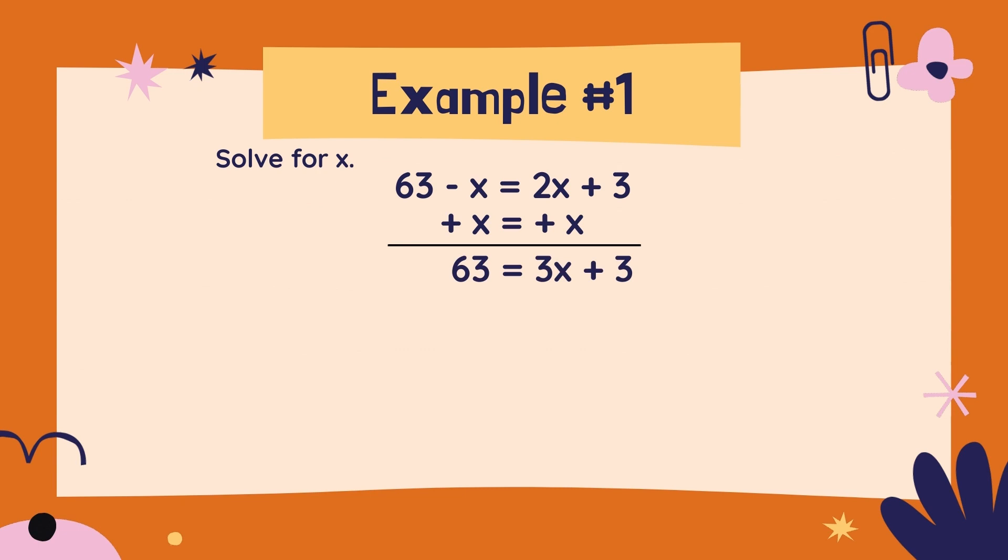Now we could have subtracted 2x from both sides, but this is what would have happened. There's not really a right or a wrong way that we could have done this. It's okay to do the minus 2x on both sides instead of plus 1x. But what happens is you'll get this negative 3x.